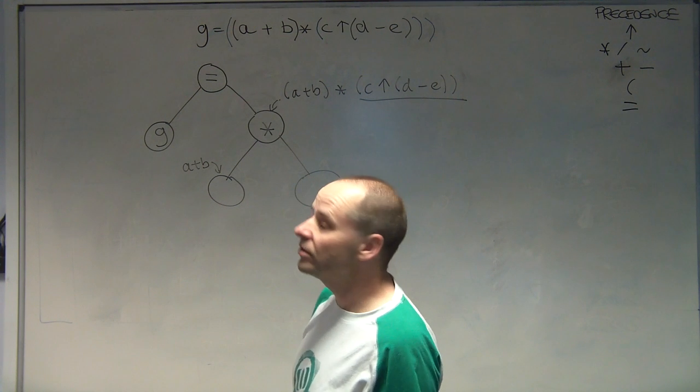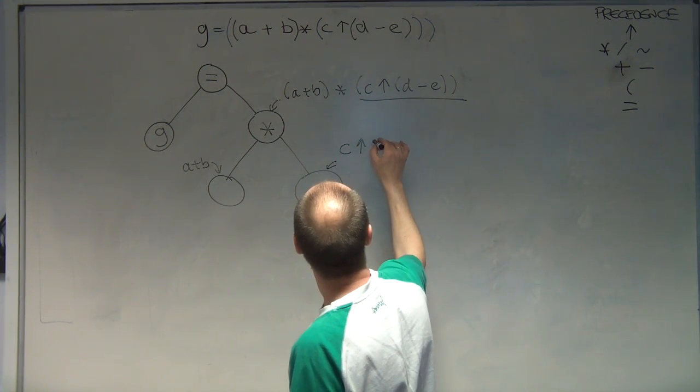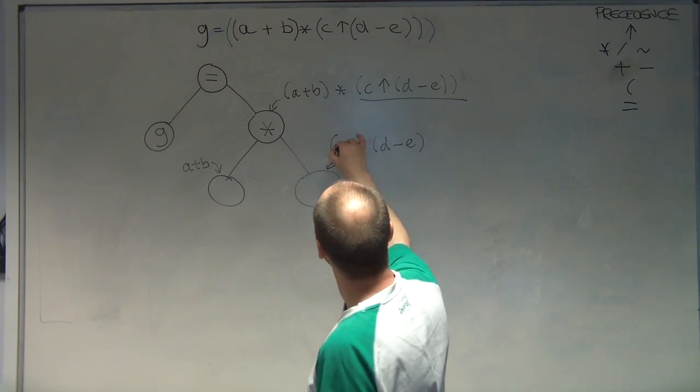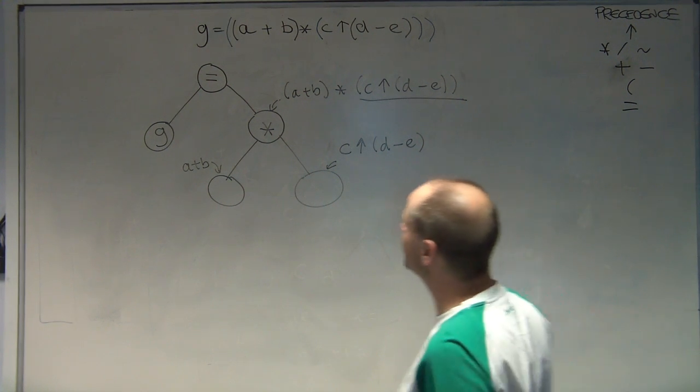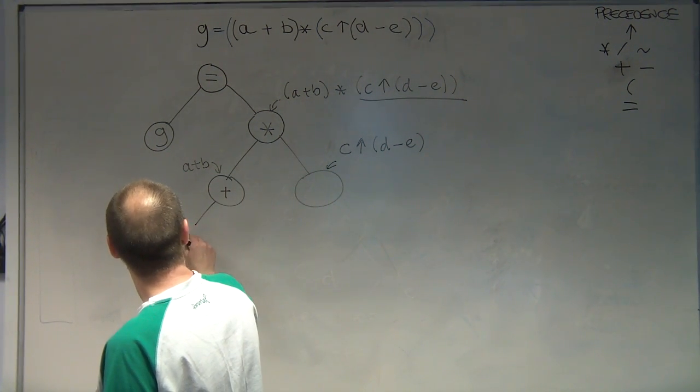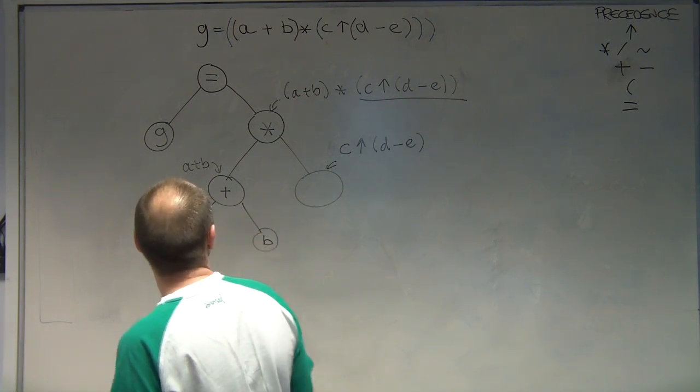And I'm just going to write that down, A plus B. On the right hand side of it I have got this other expression. So I've got C to the power D minus E. So let's do this easy one first. We've got plus, A to the left, B to the right. So that handles that.